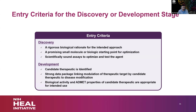Entry criteria differ for discovery versus development stage. For discovery stage, you need a rigorous biological rationale for the intended approach, a promising small molecule or biologic starting point for optimization — at least a hit or ideally a lead — and scientifically sound assays to optimize and test the target. For development phase entry, you would have a candidate therapeutic already identified, a strong data package linking target modulation to disease modification, and biological activity and ADMET properties appropriate for the intended use.